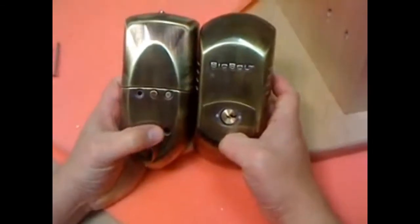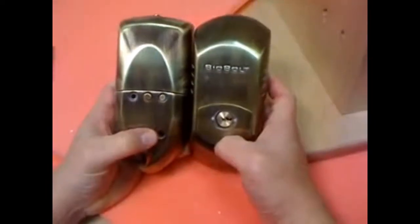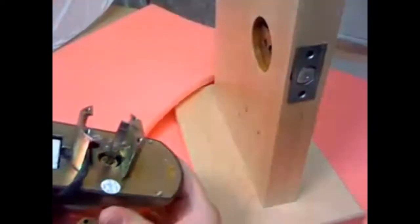Alright this video will demonstrate basically how you install a Biobolt to your door. As the other videos show you, what you'll do is you need to trim this tailpiece here to fit the length of your door. This piece of wood is like one and three quarters inches.